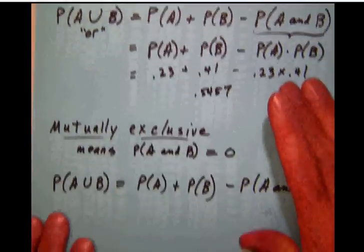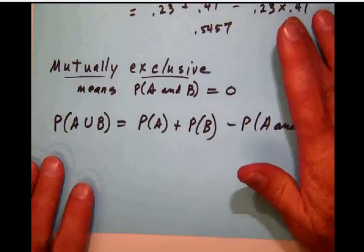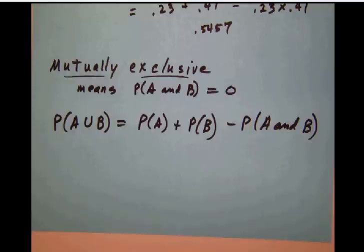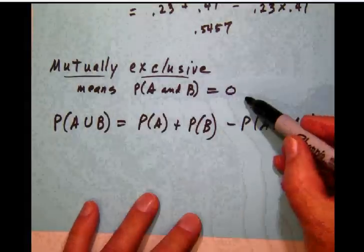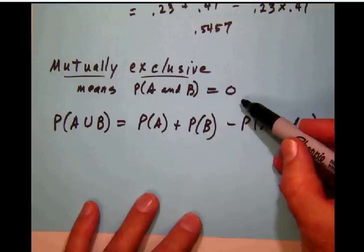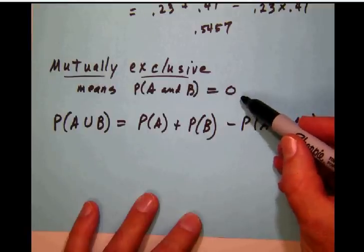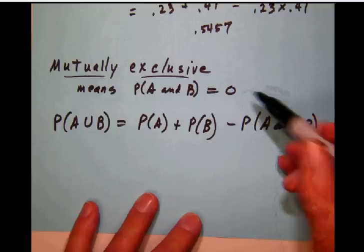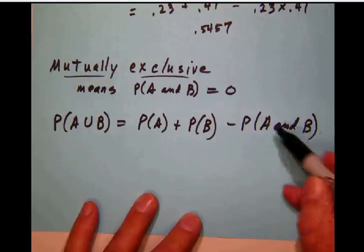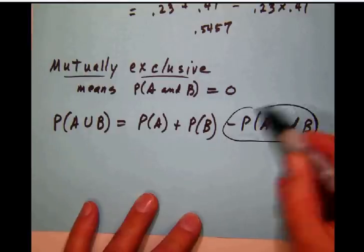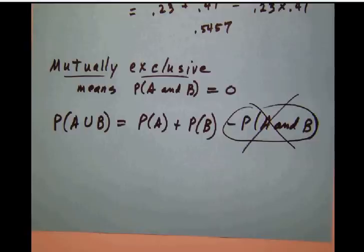If we have a situation of mutually exclusive values, what that basically means to us is that the A and B is 0, that they don't share anything. There is no intersection between the two things, A and B. So that makes it easy. That just simply means that we don't have to subtract anything because if that probability of A and B is 0, we simply add our two probabilities and we're done.